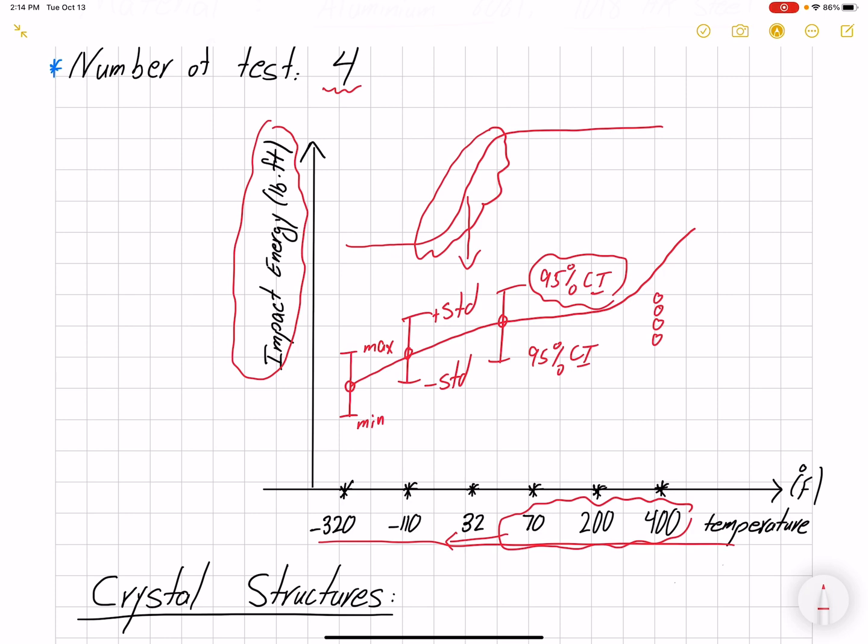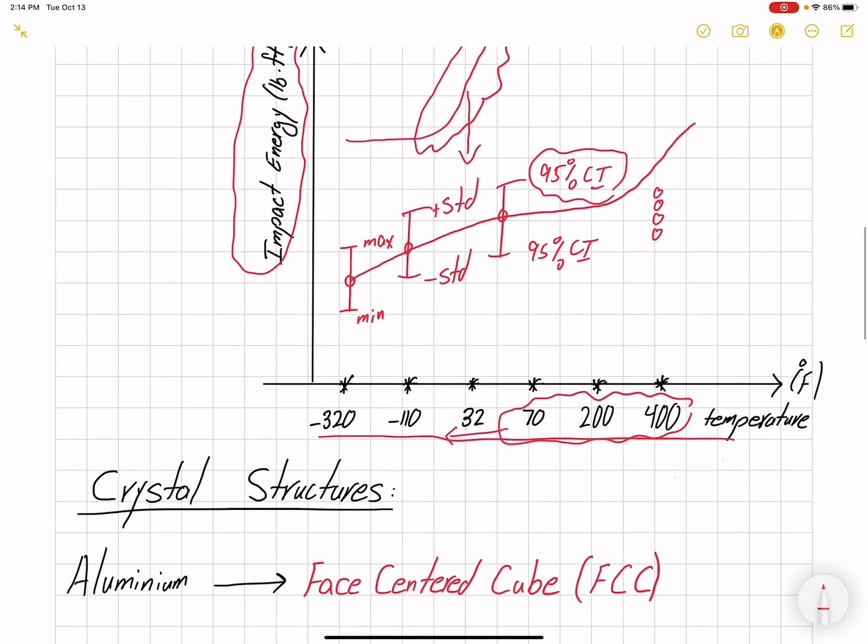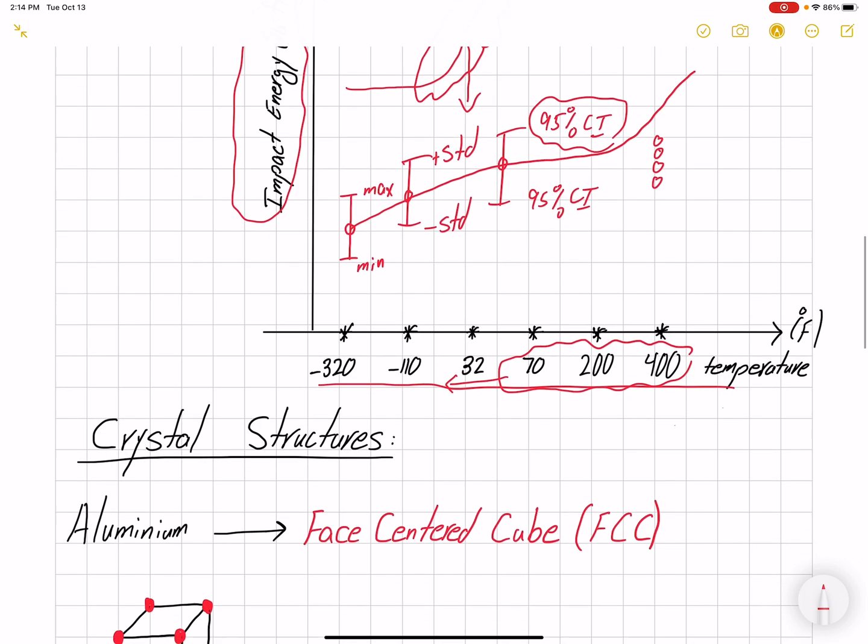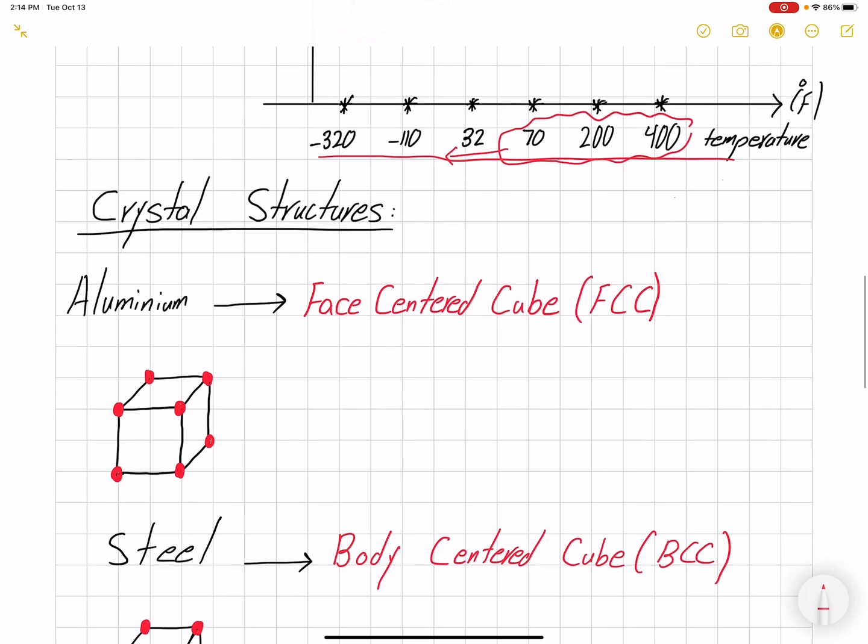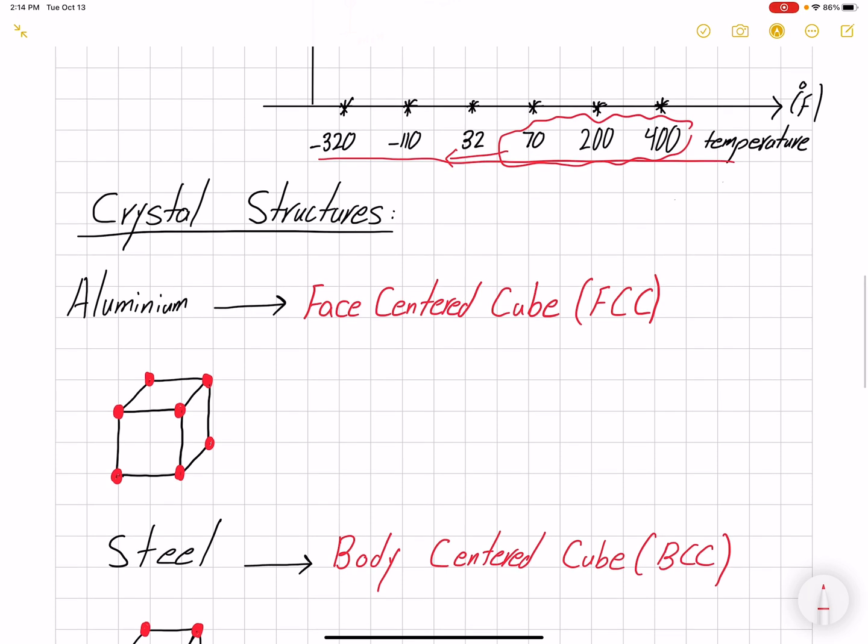We already know that aluminum does not show any ductile-brittle transition, and that has to do with the crystal structure. Aluminum is FCC (face-centered cubic), so we have half of an atom on each face.